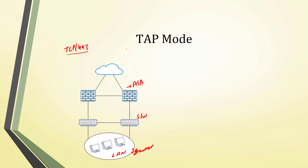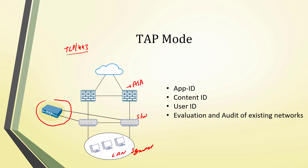In TAP mode, you deploy the Palo Alto Networks firewall alongside the network. You configure a SPAN port or mirror port on the switch, which forwards all traffic to the Palo Alto firewall. The firewall then runs its mechanisms to identify applications, threats, and user information. This gives you App-ID, Content-ID, and User-ID visibility.